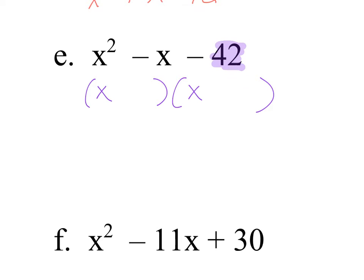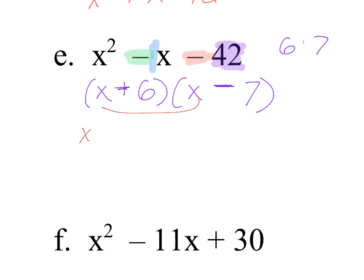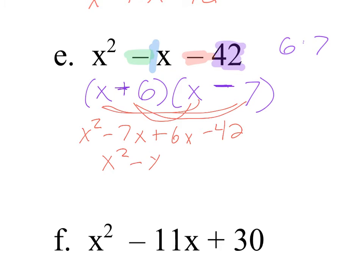For x squared minus x minus 42, I need factors of 42 that subtract to 1 — again 6 and 7. Now I look at the second operation, which is subtraction — this tells me my largest number should be negative. Since 7 is my largest and that's a minus, I get x minus 7 and x plus 6. FOIL check: x squared minus 7x plus 6x minus 42. Negative 7 and positive 6 leaves me with negative x. Sure enough, that's my original expression.